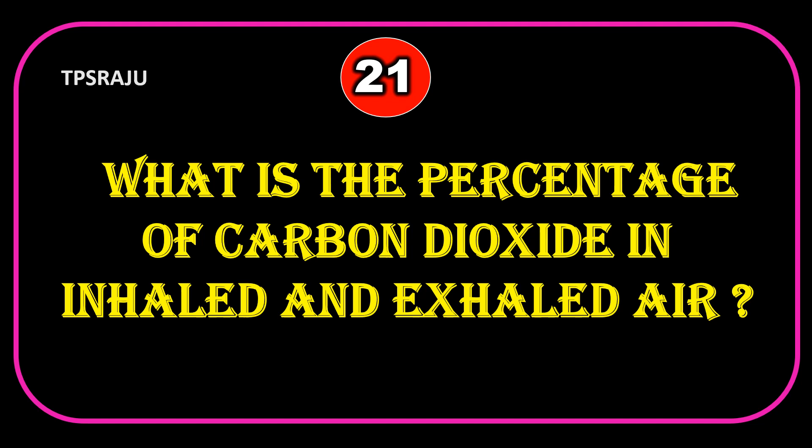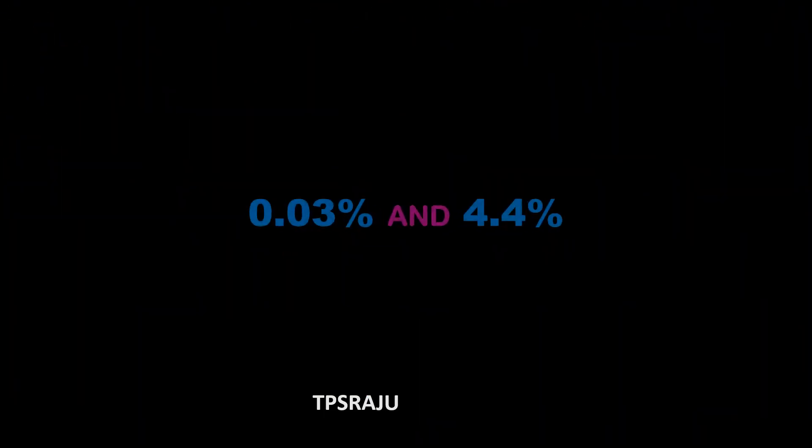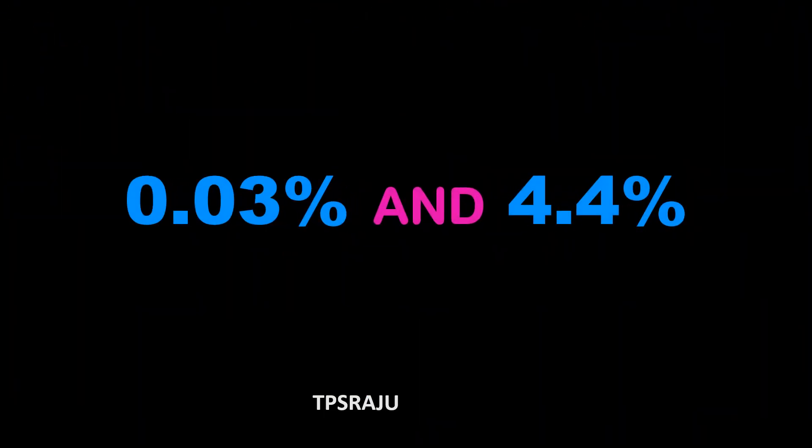What is the percentage of carbon dioxide in inhaled and exhaled air? The percentage of carbon dioxide in inhaled air is 0.03% and in exhaled air is 4.4%.